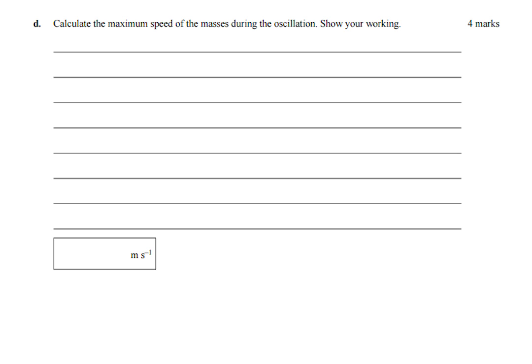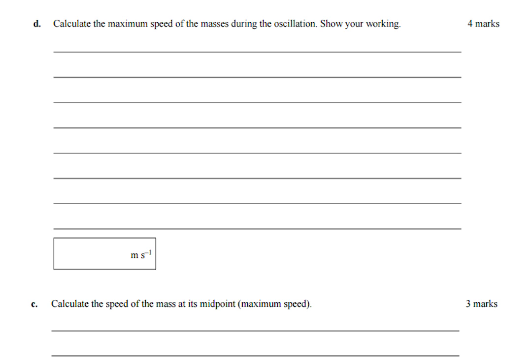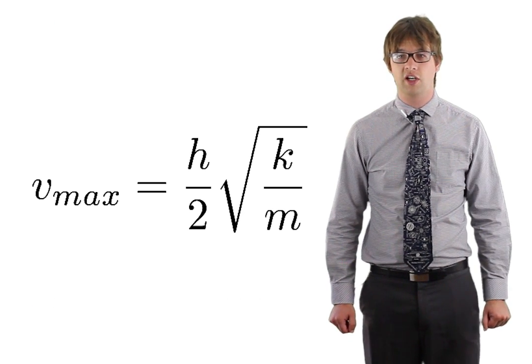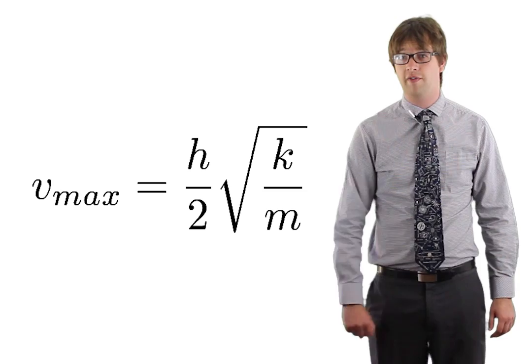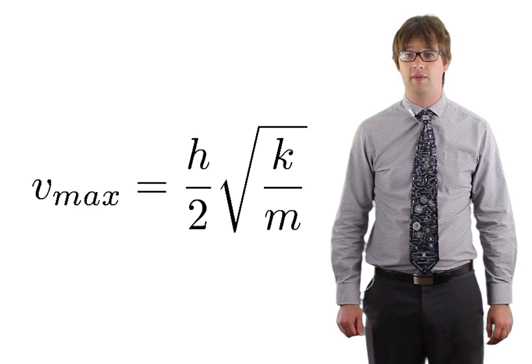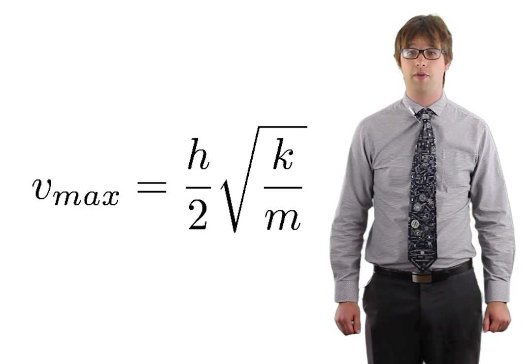In 2015, the wording of this question changed to read 'find the speed at the midpoint.' Some students got strategic and used this derived formula to calculate the maximum speed, a very easy way to grab three marks.